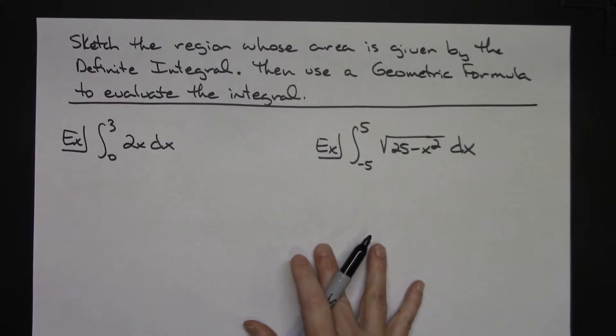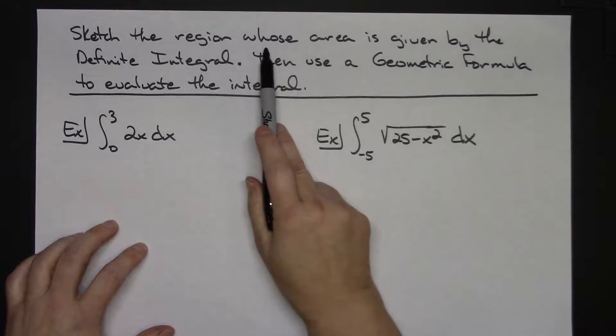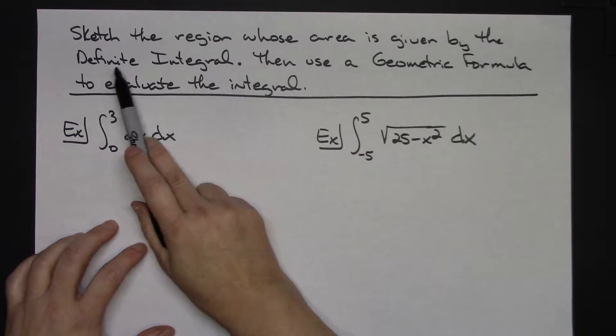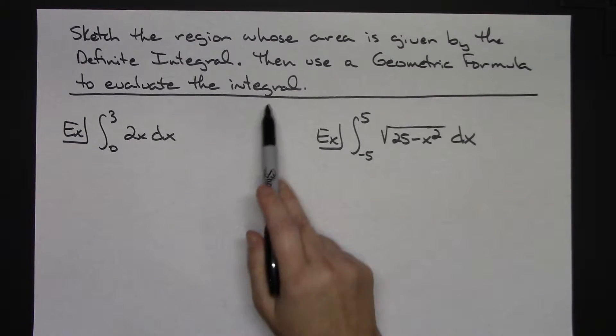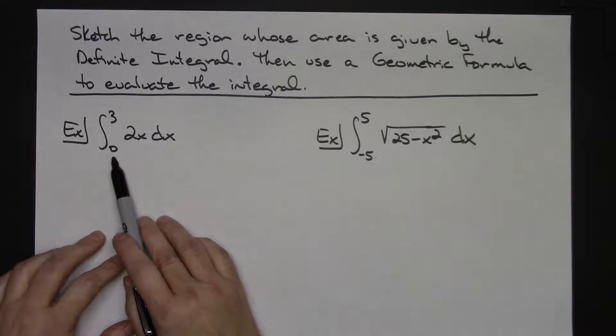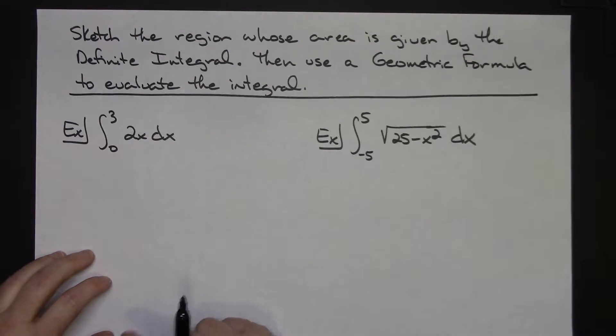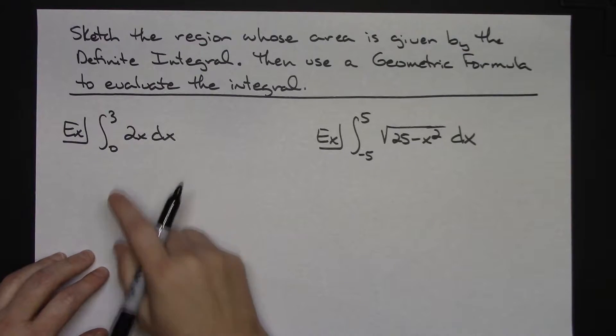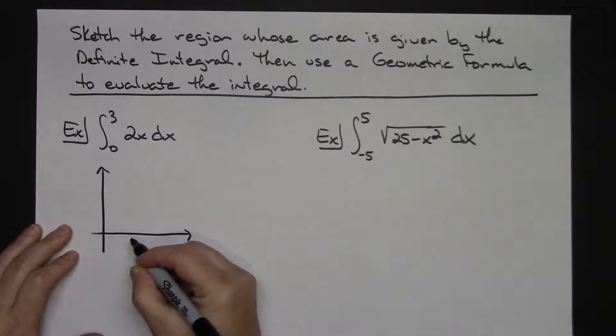Now, if we wanted to look at another set of examples here, something different that they could do, just continuing to play around with the idea of the definite integral being the area under a curve, they could tell you to sketch a region whose area is given by the definite integral, then use a geometric formula to evaluate the integral. So we'll just do a couple examples here. Let's suppose they give you the integral that runs from 0 to 3 of 2x dx. So then the first thing you're going to want to do is sketch the region. This is a straight line.